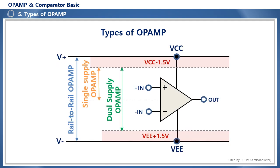Op-amps can be divided into dual supply op-amps and single supply op-amps depending on the power supply method, and can be classified as rail-to-rail op-amps whose output signal has a full swing within the power supply range. A typical op-amp cannot achieve a full swing across the power supply voltage range due to its internal circuit and output stage push-pull structure, and outputs within a range approximately 1.5 volts lower than the supply. Since it is difficult to configure a negative power supply, the single power supply method is widely applied.